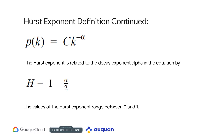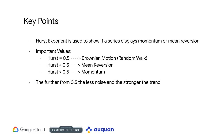To recap, the Hurst exponent measures the degree to which a time series either regresses strongly to a longer-term mean or clusters in a particular direction. Important values: a Hurst of 0.5 implies the data follows a random walk; a Hurst closer to 0 implies mean reversion; a Hurst closer to 1 implies momentum.